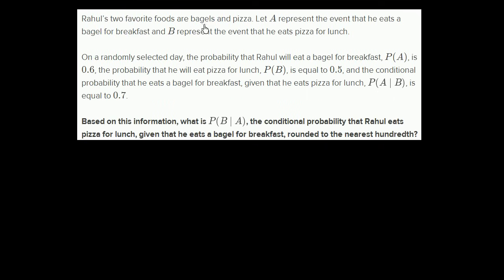Rahul's two favorite foods are bagels and pizza. Let A represent the event that he eats a bagel for breakfast, and let B represent the event that he eats pizza for lunch. On a randomly selected day, the probability that Rahul will eat a bagel for breakfast — probability of A — is 0.6.